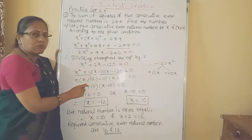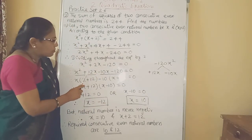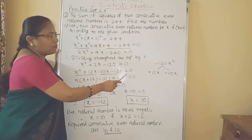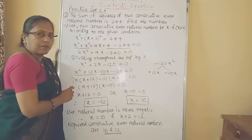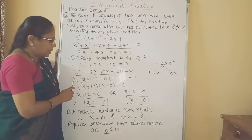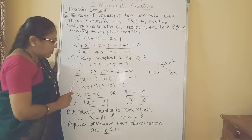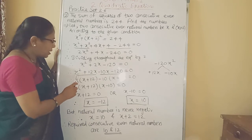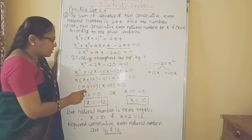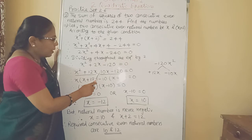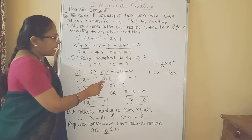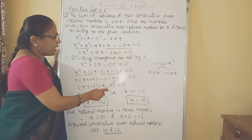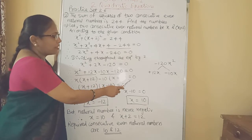So split the middle term using factors plus 12x minus 10x minus 120 equal to 0. Now we already know how to solve by using factorization. Make the group of two factors. From first binomial we will take x as a common factor. So the other factor is x plus 12. Minus sign we will write first. From 10 and 120 we will take 10 as a common factor. So in bracket we will get x plus 12 equal to 0.